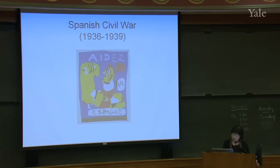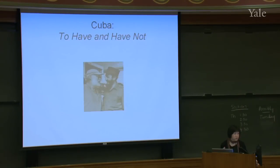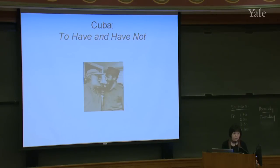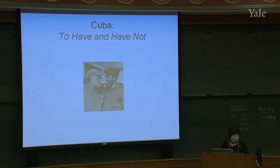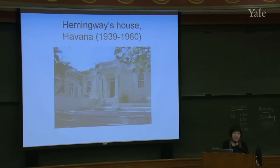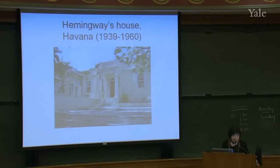Hemingway was really a player on a very large-scale map of the world, and because of that, we shouldn't be surprised that he would go to other countries as well. His love of the Spanish language took him to Cuba. We'll be reading To Have and Have Not, which is about Cuba. There's a very unforgettable image of Hemingway and Castro — we might not know that they were actually good friends. The Spanish Civil War ended in 1939, and from 1939 to 1960 Hemingway actually lived in Cuba, where he wrote many important novels including The Old Man and the Sea.